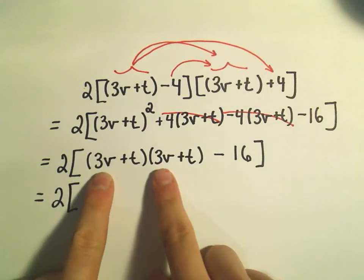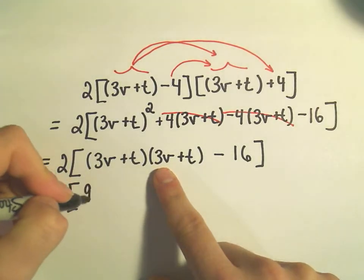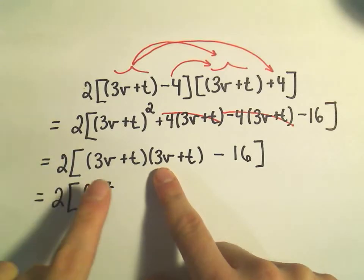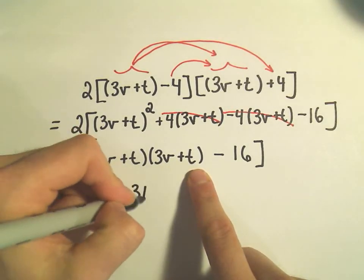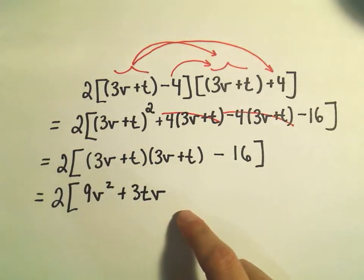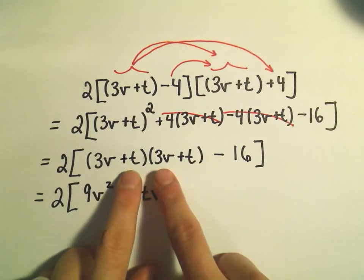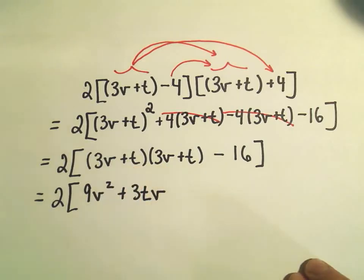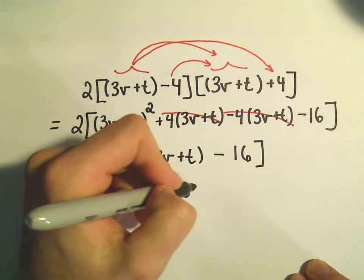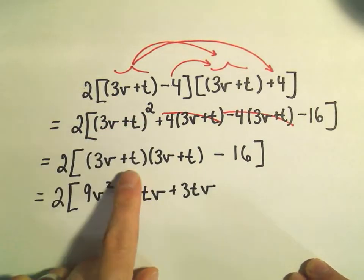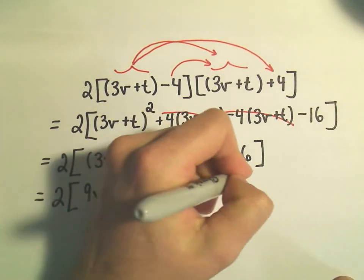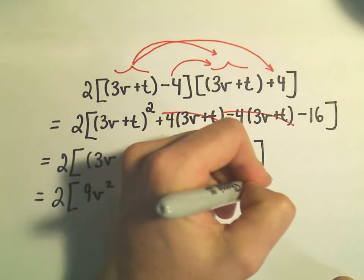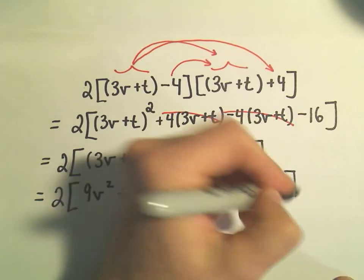So 3v and 3v would be 9v squared. 3v times a positive t would be 3tv. I'm going to just alphabetize. On the inside, we'll have positive t times 3v, so it'll give us another 3tv. t times t will give us a positive t squared. We still have our minus 16 left over.